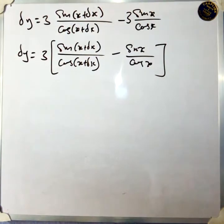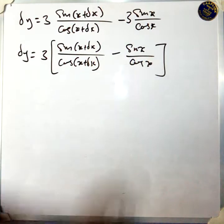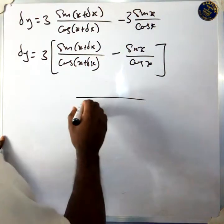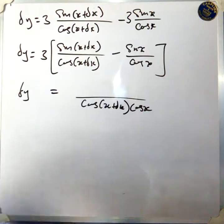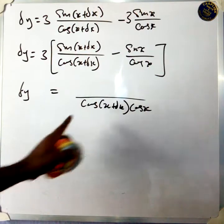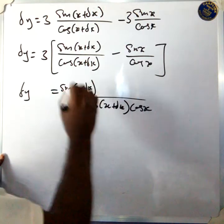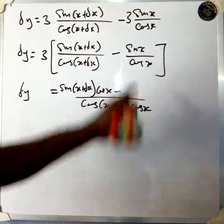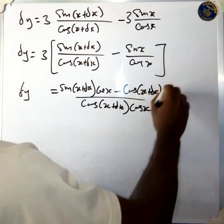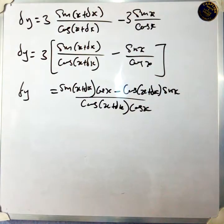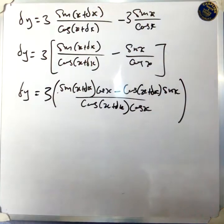This is a fraction. The LCD here will be cos(x plus delta x) times cos x. So you combine: sine(x plus delta x) times cos x, minus cos(x plus delta x) times sine x — all over cos(x plus delta x) times cos x. Don't forget your bracket — that is what remains inside the bracket.